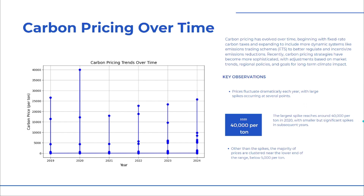Looking at carbon pricing trends and the evolution of carbon pricing over time: carbon pricing has evolved from fixed rate taxes to more sophisticated emissions trading schemes (ETS), with prices fluctuating based on market trends and regional policies. While we see dramatic price spikes — especially in 2020 — most carbon prices are clustered around the lower range, below $5,000 per tonne.